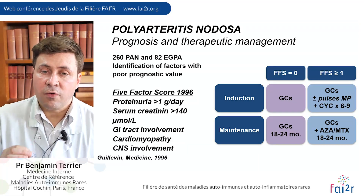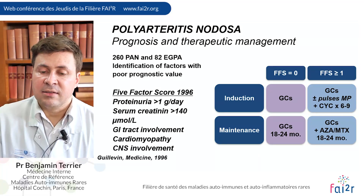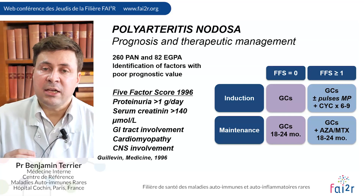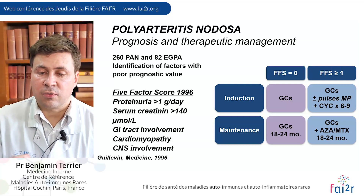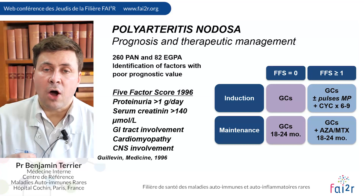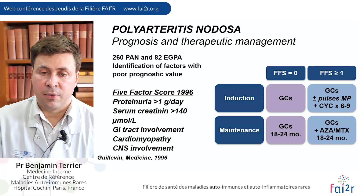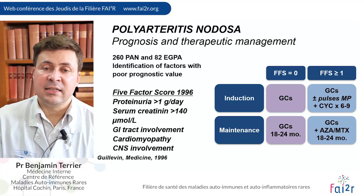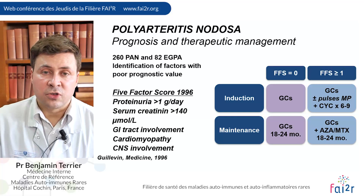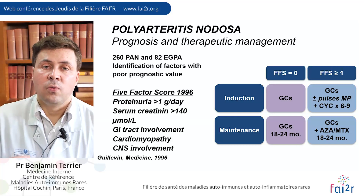This is about overall survival. In patients with no poor prognosis factors, treatment based only on glucocorticoids was preferred initially, while in patients with at least one poor prognosis factor, treatment was based on a combination of glucocorticoids and immunosuppressive agents.